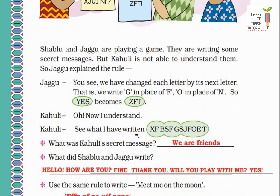Jaggu said: 'You see, we have changed each letter by its next letter. That means we write G in place of F, O in place of N. So YES becomes ZFT.' Jaggu is saying that if I have to write YES, then I will write ZFT in its place, because Y's next letter is Z, E's next letter is F, and S's next letter is T. In this way. Kahuli says 'Oh, now I understand.' Kahuli, see what I have written. What was Kahuli's secret message? So we will decode it using the same rules. To find the original message, we will see the previous letter of the letter given here. So X's previous letter is W. F's previous letter is E. B's previous letter is A. R comes before S. E before F. F's previous letter is F. R before S. In place of J we will write I, because I is the previous letter of J. F is E, O is N. In place of E we will write D, because D comes before E. And in place of T we will write S. So Kahuli's secret message was 'We are friends.'